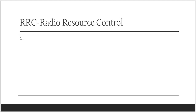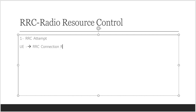Our topic is RRC — Radio Resource Control. First, let's understand what is RRC attempt. RRC attempt is counted when the eNodeB receives an RRC connection request, meaning the UE sends an RRC connection request to the eNodeB.